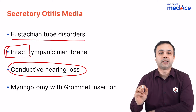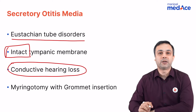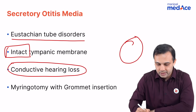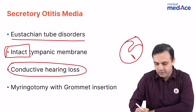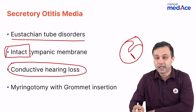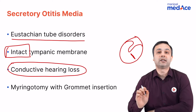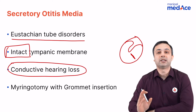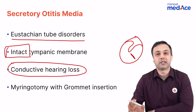When you talk about the treatment of secretory otitis media, you give a radial incision in the antero-inferior quadrant of the pars tensa and insert a grommet — this is the treatment of choice. In adults, you have to treat the underlying cause of secretory otitis media.